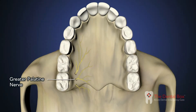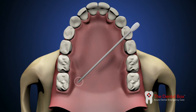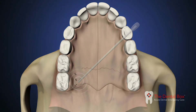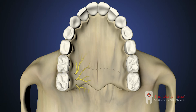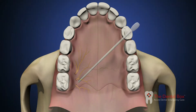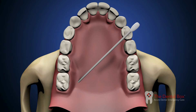Place a cotton swab and apply moderate pressure at the greater palatine foramen, which is located just distal of the second maxillary molar where the teeth transition to the roof of the palate. You will note the blanching of the soft tissue with the pressure applied by the cotton swab.